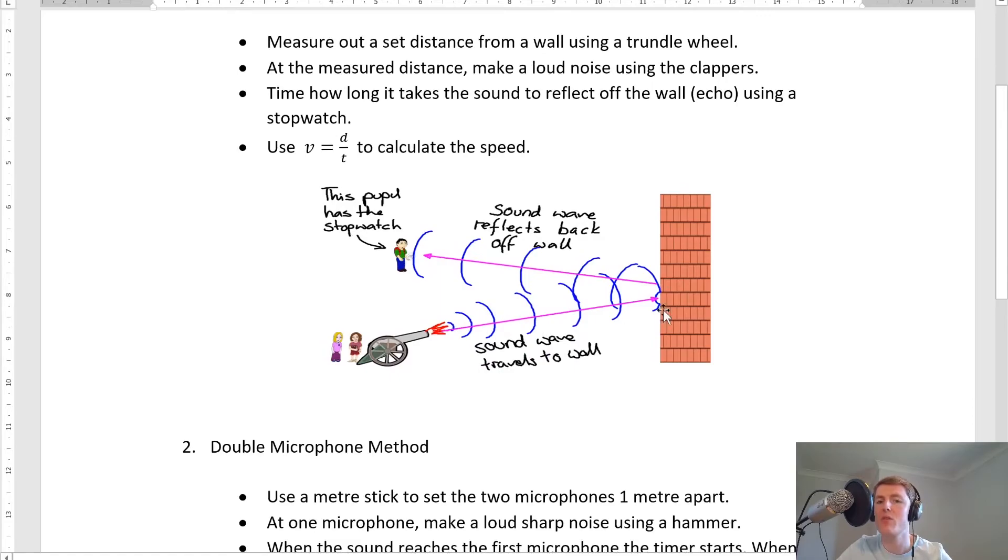That sound would reflect off the wall and come back to this person over here who is standing ready to measure the time. So you would time how long it takes for the sound to reflect off the wall, the echo, using a stopwatch, and then use speed equals distance divided by time to calculate the speed. You would know your distance from using the trundle wheel, and you'd know your time from the stopwatch, and then you could calculate your speed.